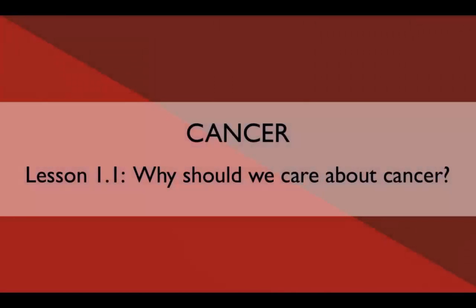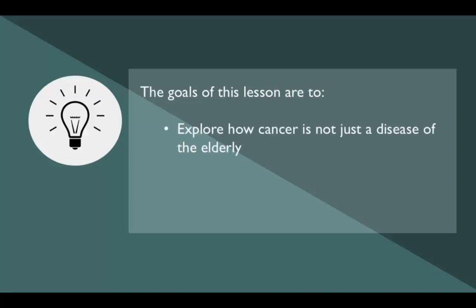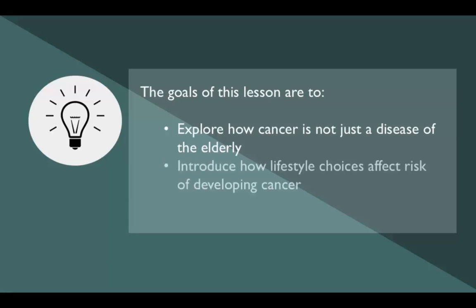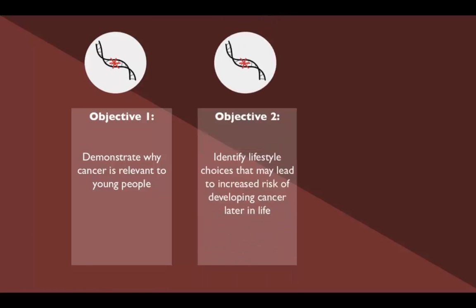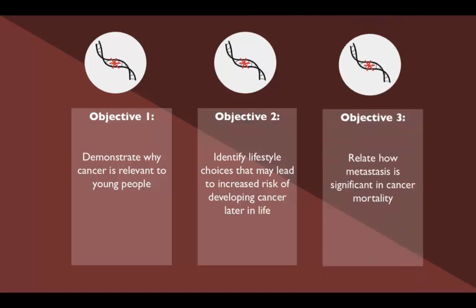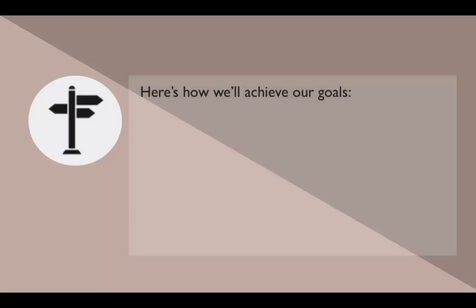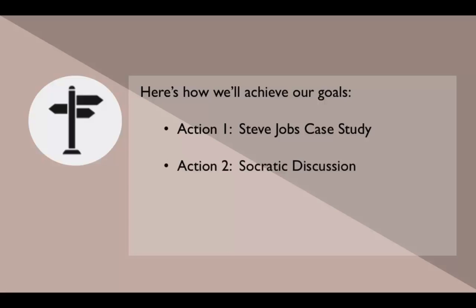Welcome to Cancer Lesson 1.1: Why Should We Care About Cancer? The goals of this lesson are to explore how cancer is not just a disease of the elderly, and to introduce how lifestyle choices affect risk of developing cancer. Students should be able to demonstrate why cancer is relevant to young people, identify lifestyle choices that may lead to increased risk, and relate how metastasis is significant in cancer mortality. We will achieve these goals by analyzing a case study on Steve Jobs and engaging in a Socratic discussion.